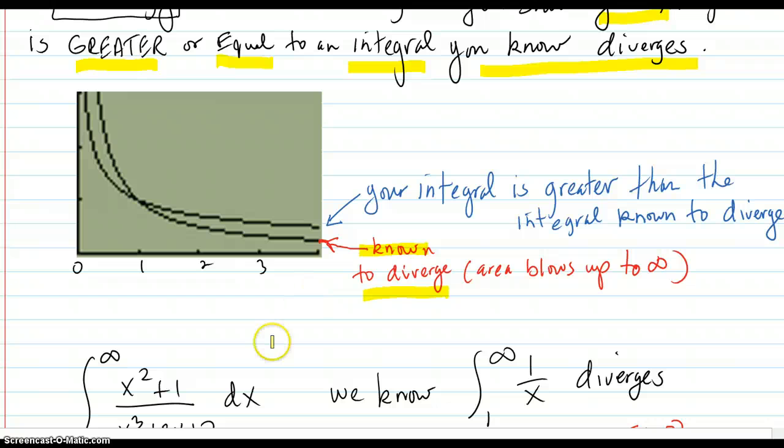So if your integral on the region of integration, say from 1 to infinity, is greater than the one you know to diverge, then your integral is going to diverge. So if this area here adds up to infinity, then certainly your area, which is bigger, adds up to infinity also.